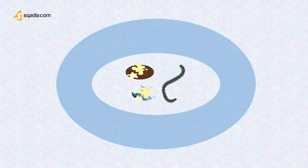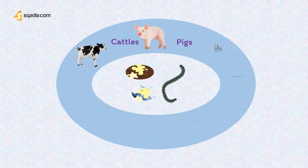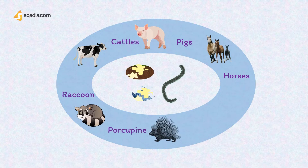Leptospira is most often spread through exposure to the urine of infected animals, either from direct contact or from contact with soil or water contaminated by their urine. Common animals which transmit leptospirosis include farm animals such as cattle, pigs, and horses, but it can range from wild animals such as raccoons and porcupines to even domesticated dogs.